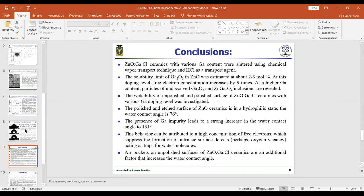In conclusion, zinc oxide doped with gallium and chloride ceramics with various gallium content were sintered using chemical vapor transport technique and hydrogen chloride as transport agent. The solubility limit of gallium oxide in zinc oxide was estimated at about two to three mole percent.